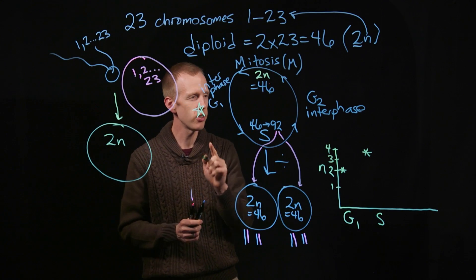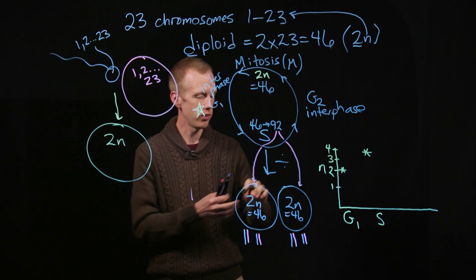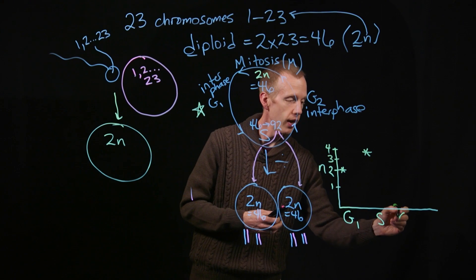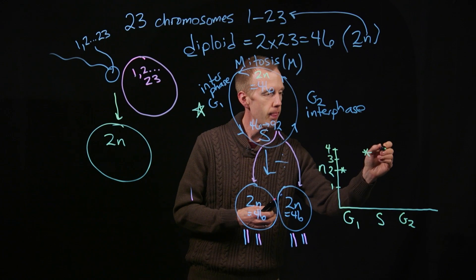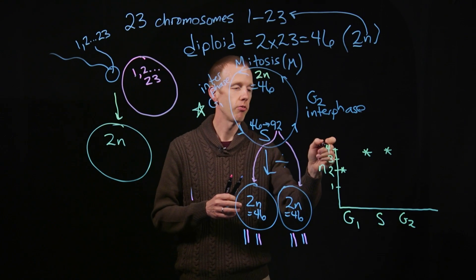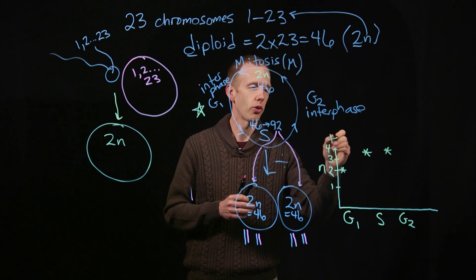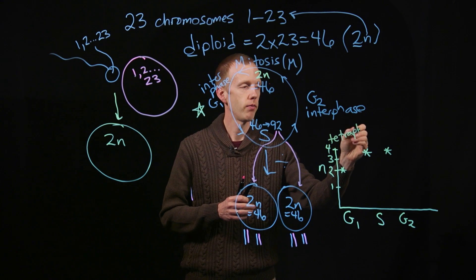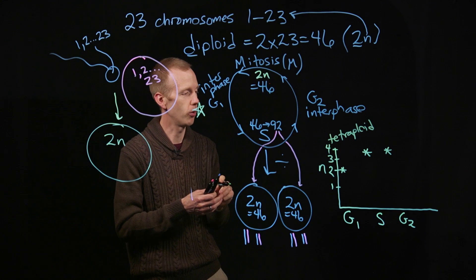So temporarily, this is the tricky part. After synthesis, when you look in G2 phase, this organism's cell is temporarily 4n, which is also called tetraploid. It's got four copies, temporarily, of every chromosome.